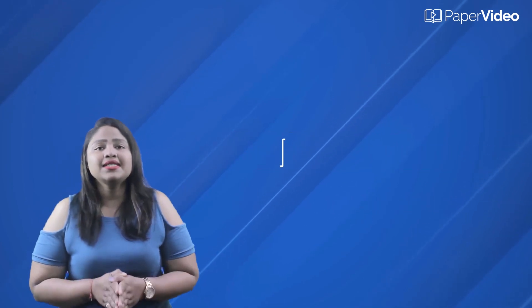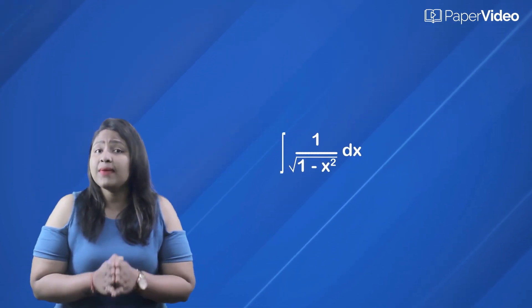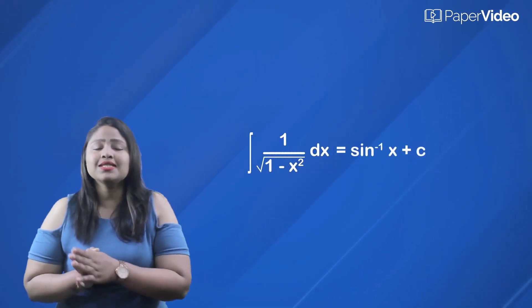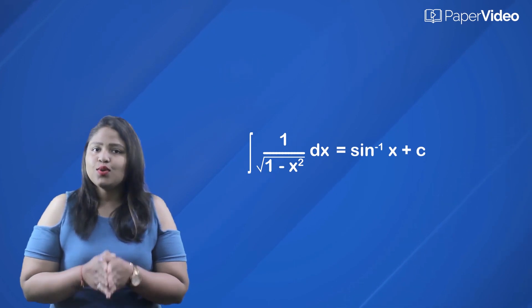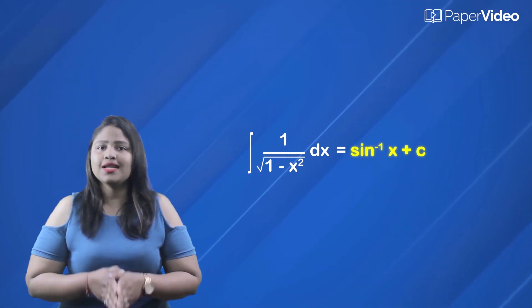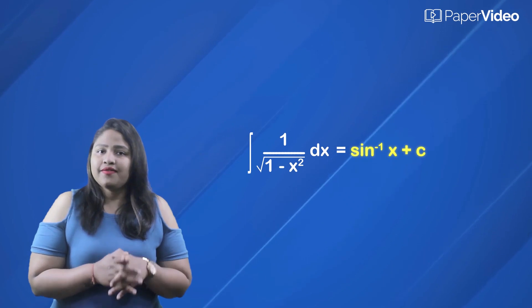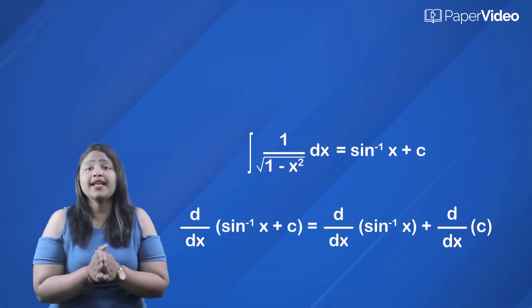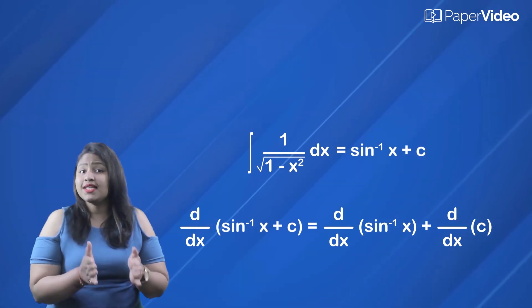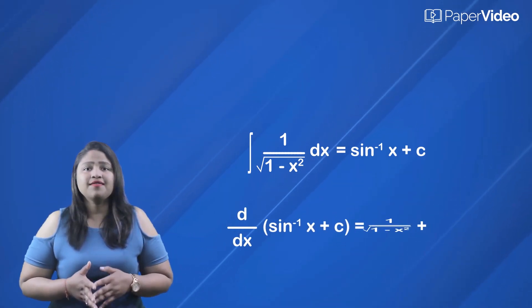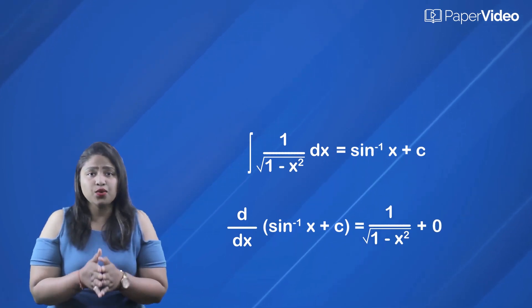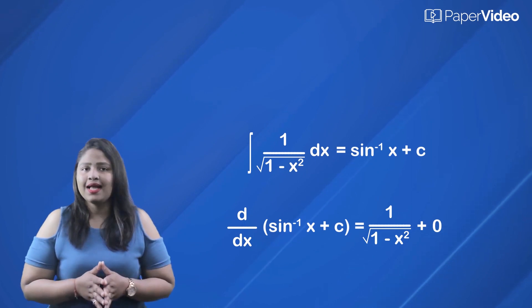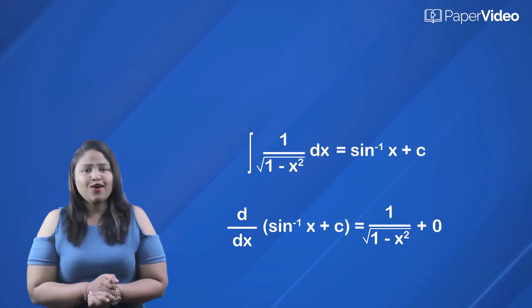Next, we have the integral of 1 upon square root of 1 minus x squared. This integral is equal to sin inverse x plus c. So let us differentiate this expression and check if we get the integrand. The derivative of sin inverse x plus c equals the derivative of sin inverse x plus the derivative of c. We know that the derivative of sin inverse x equals 1 upon square root of 1 minus x squared, and the derivative of any constant is 0.